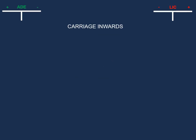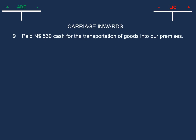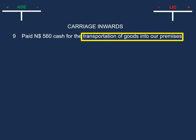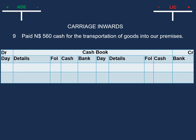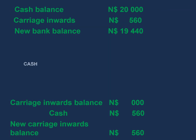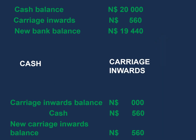Let's have a look at the transaction for carriage inwards. On the 9th, paid 560 cash for transportation of goods into our premises. The two accounts we can identify are cash and carriage inwards, because the goods were transported into the premises. This will involve our cash book because the carriage inwards was paid with cash. So the amount will go under our cash column — our cash will be decreasing and our carriage inwards will be increasing, because previously we did not have a carriage inwards account.